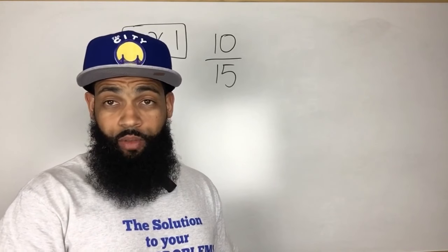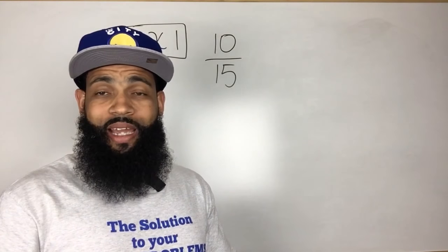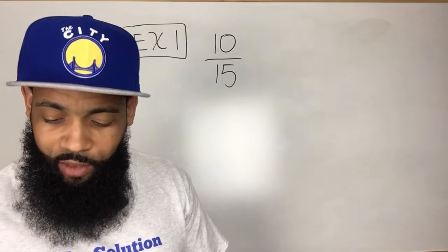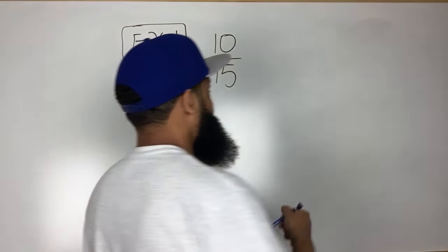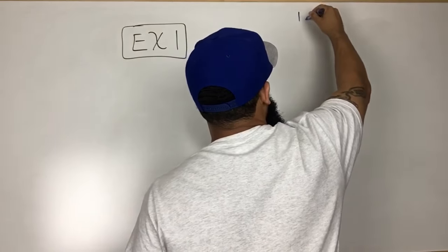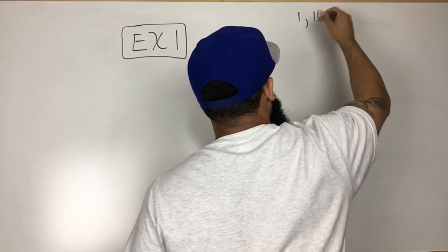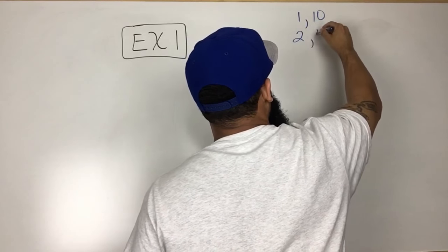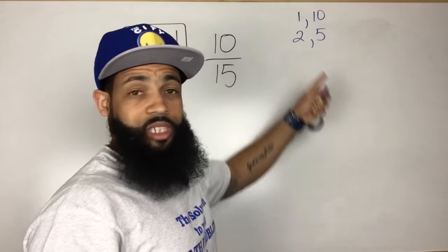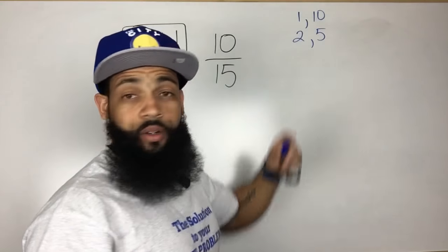Now a factor of a number is the numbers that I can use to multiply to get that number. So in this case if I want to find the factors of 10, then I can multiply 1 times 10 to get 10. So the factors of 10 are 1, 2, 5 and 10.